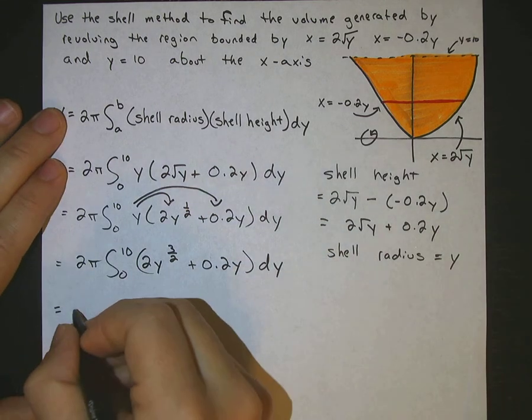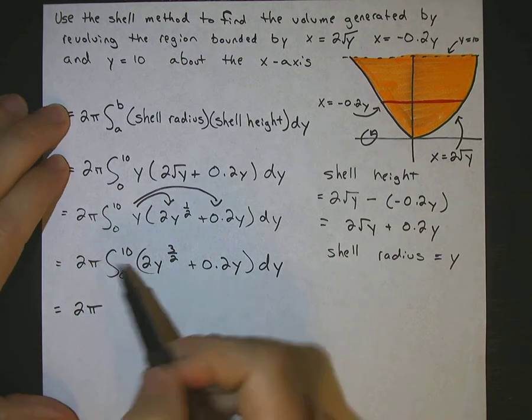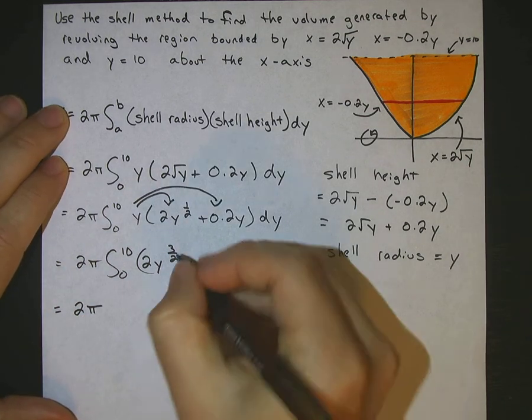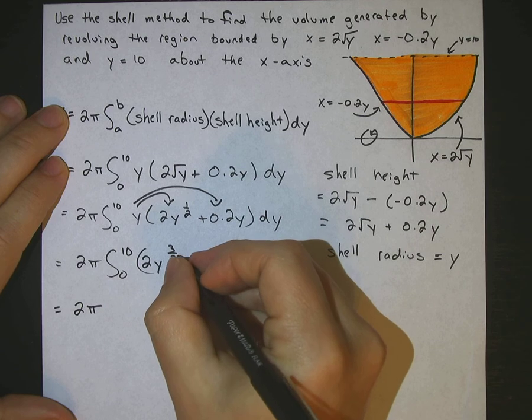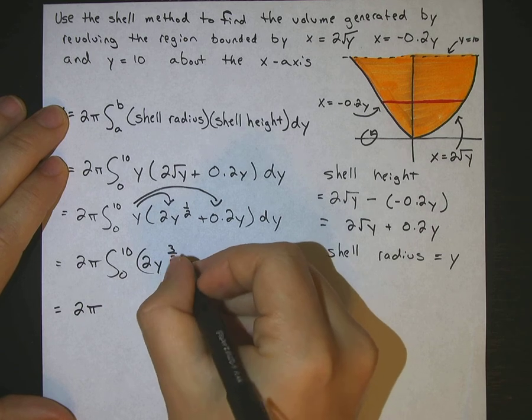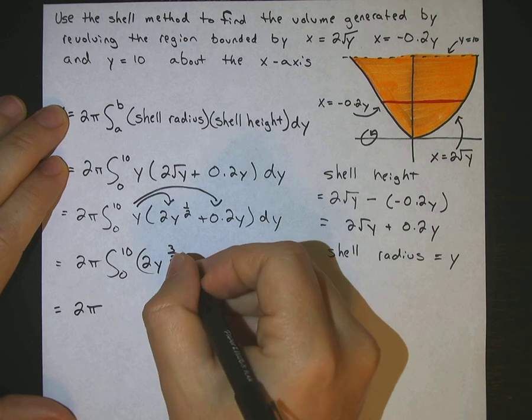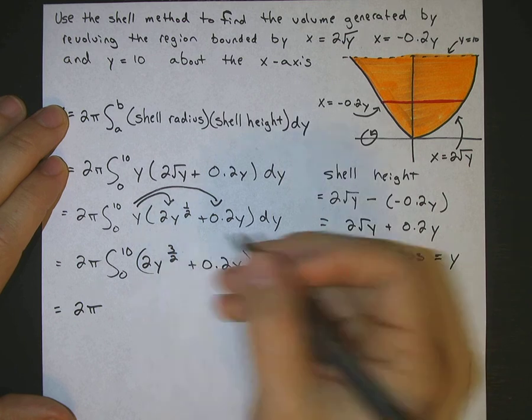I'm going to leave the 2 pi out front. Okay, what happens when we integrate 2y to the 3 halves? Well, we add 1 to this power, and then we divide by whatever we get. So we'll add 1, which 1 is 2 over 2, so that would be 5 over 2.